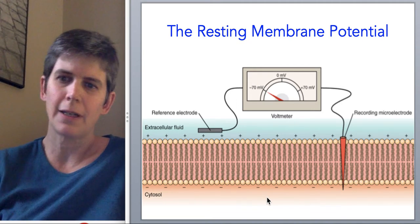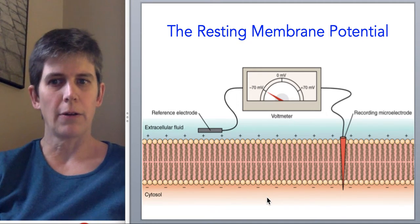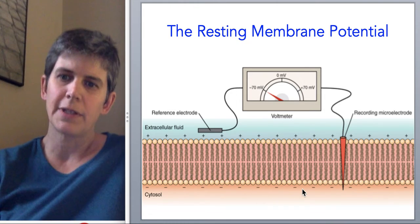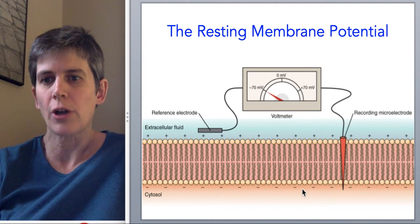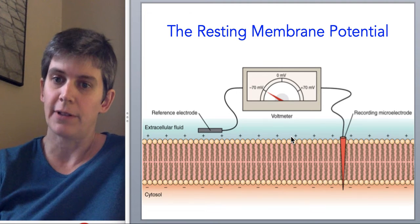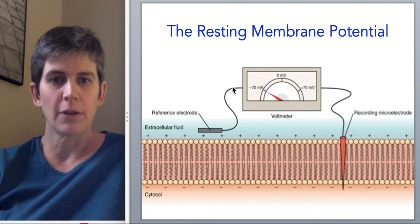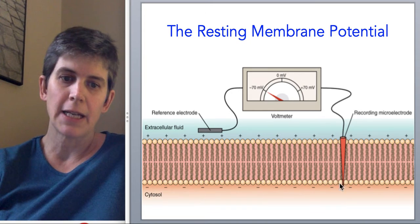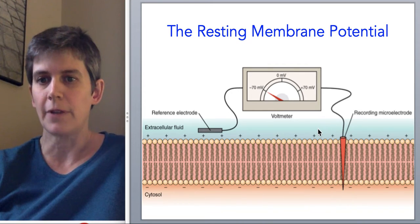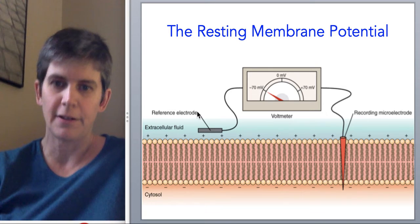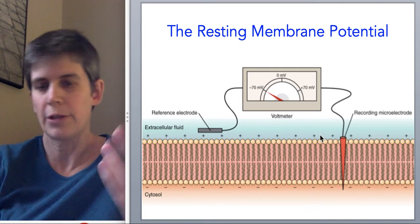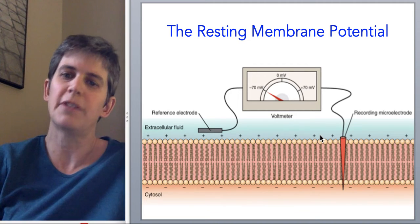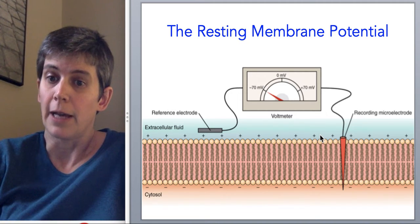Today we're going to talk about the resting membrane potential, which by definition is the fact that the inside of cell membranes is negatively charged compared to the outside. Here's our little cartoon voltmeter showing a charge of negative 70 — that's the inside relative to the outside. If our voltmeter had its reference and recording electrode switched, it would read positive 70, so it's a bit arbitrary to say it's the inside relative to the outside.